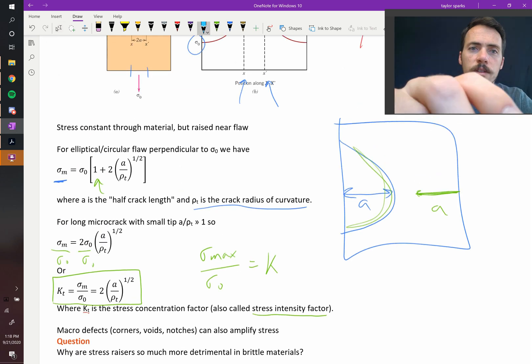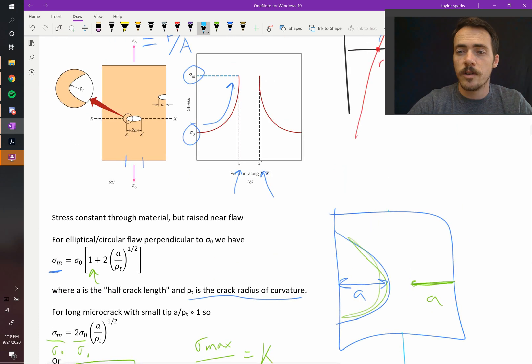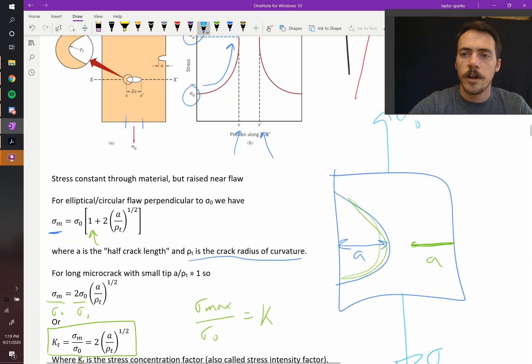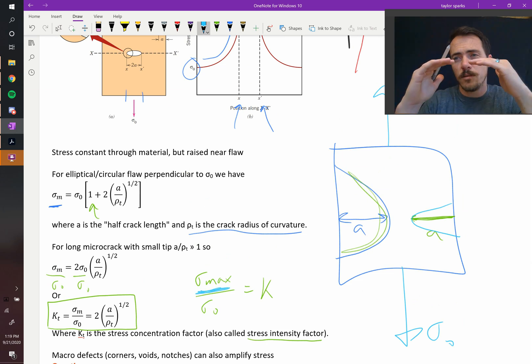You're pulling on it from the top and bottom, so it's under tension. As you pull on it, if it's a ductile material, this could deform. It could deform into that, so it can blunt that crack tip, and in doing so, it's going to be reducing the maximum stress. The maximum stress is going to continue to go down as you increase that radius of curvature.